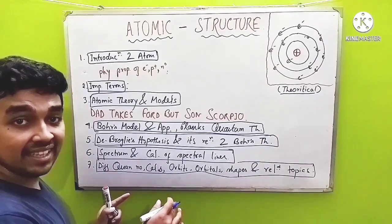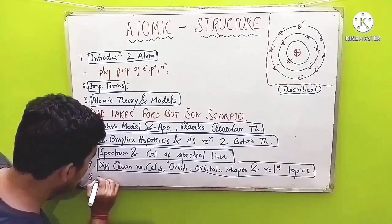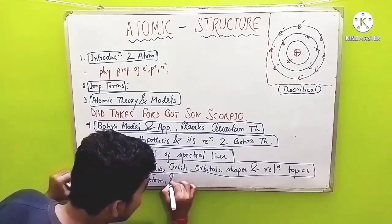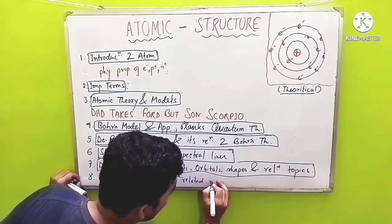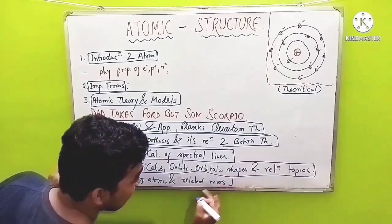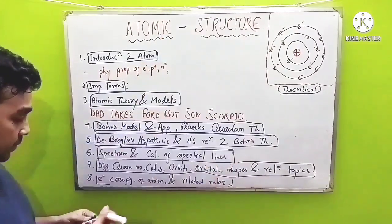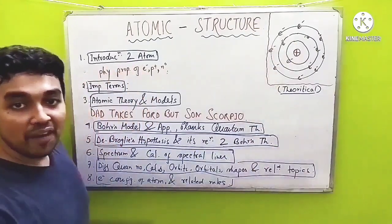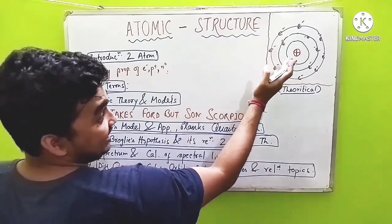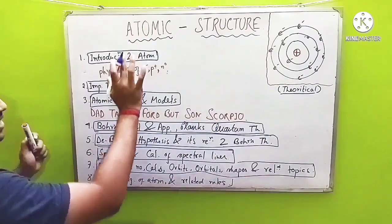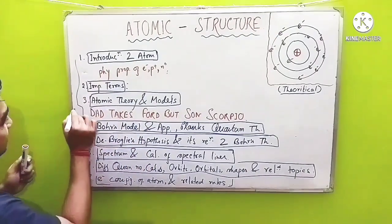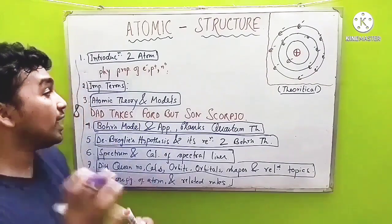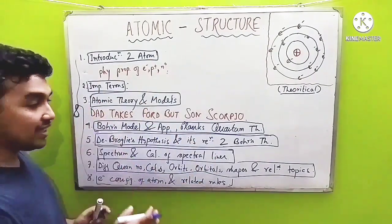After that, you will get to know about number eight — electronic configuration of the atom and its related rules and regulations. This will be the last topic of this atomic structure series. So, you can see the structure of atom may look small, but it contains a huge theory behind it. I will jot down all of this into eight small lectures, with related questions and important numericals at the last part of each lecture.